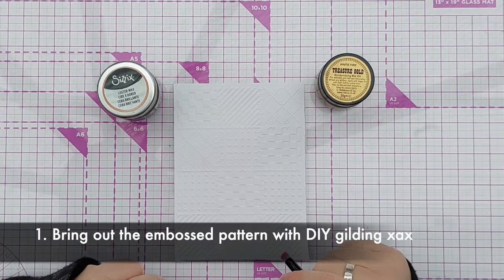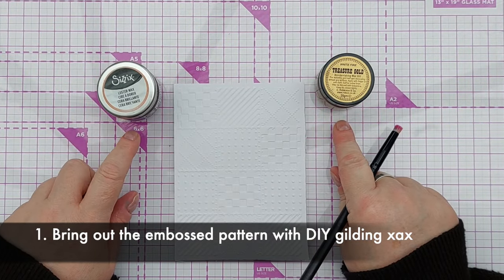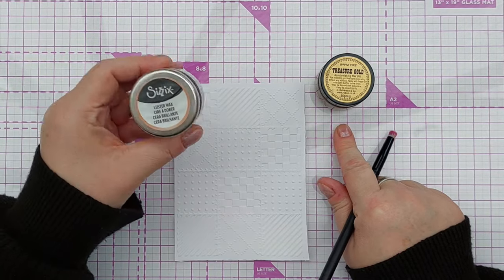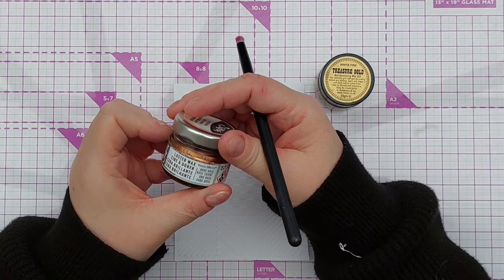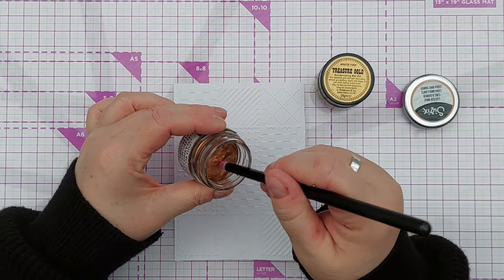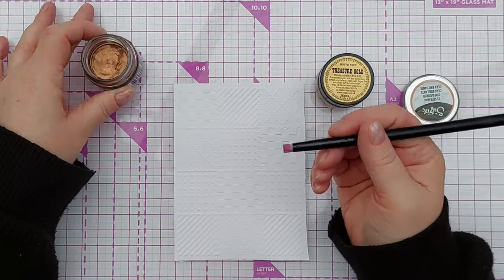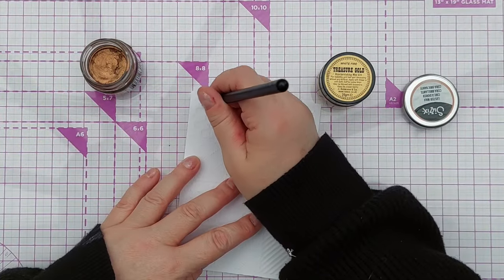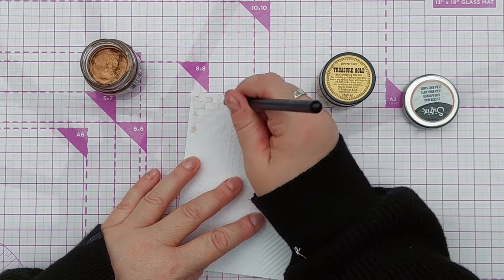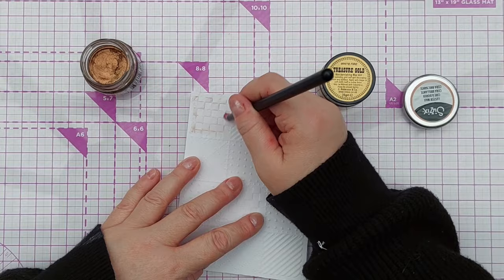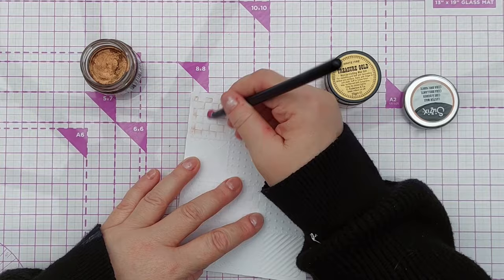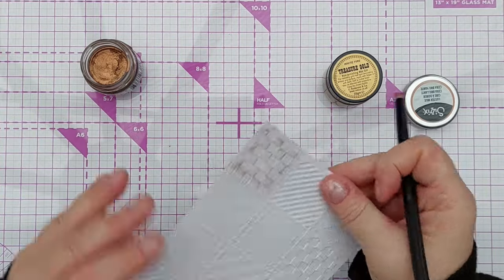The first thing we're going to do is make our own gilding waxes. These are the two commercially available gilding waxes that I have. We've got Sizzix Lustre Wax in rose gold, a beautiful rose gold coppery color. You can pick some up on a brush or some other applicator and brush it gently across an embossed pattern, and it brings out the pattern giving everything it touches a rose gold lustre.